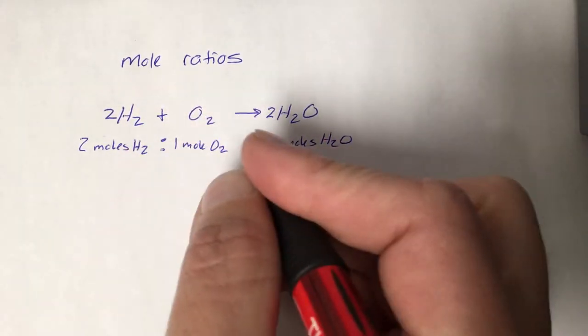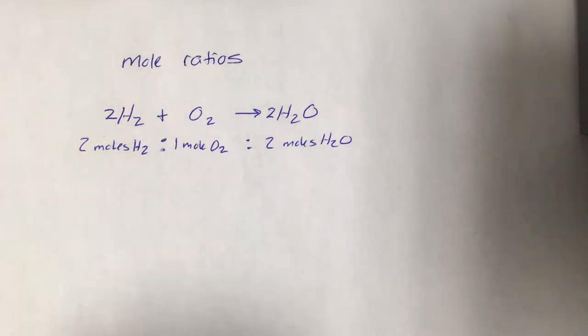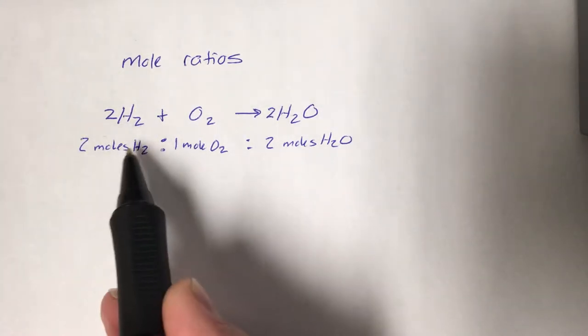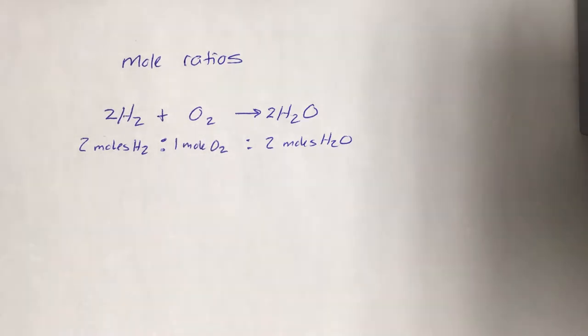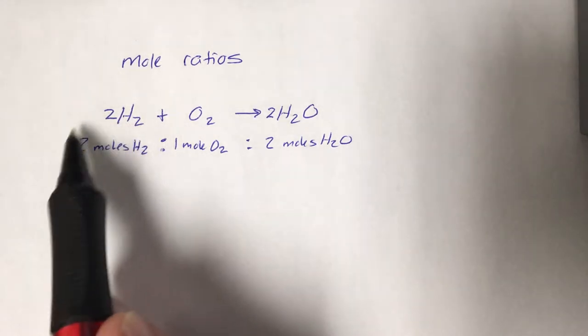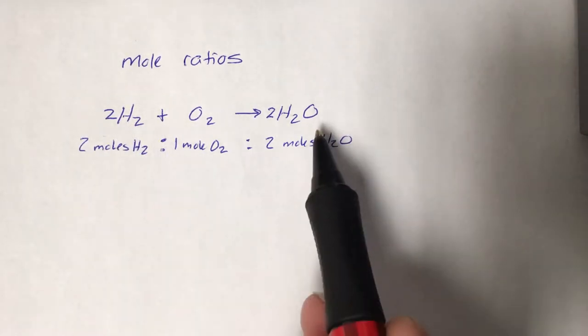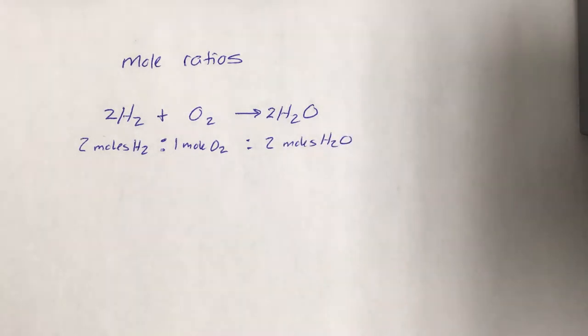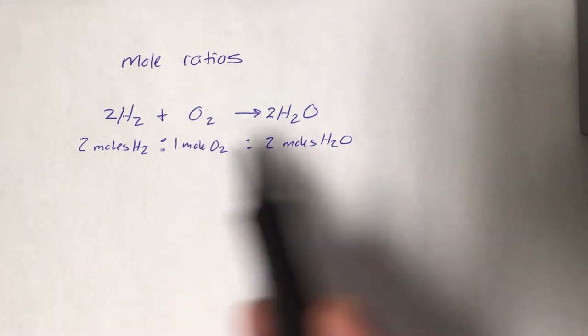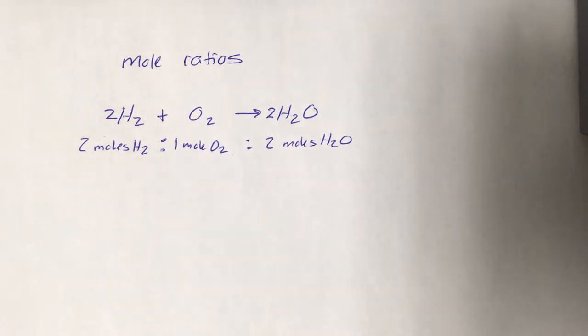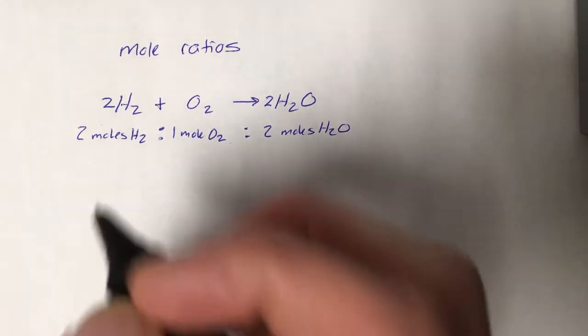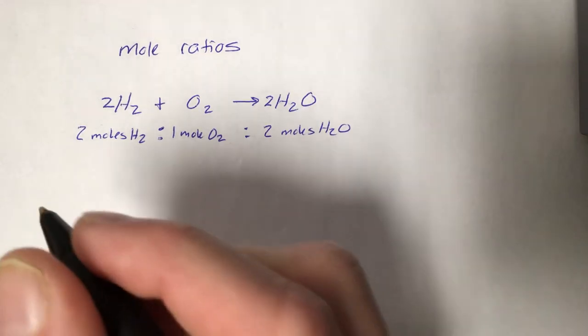These are ratios. It's a two to one to two ratio. In other words for every two moles of hydrogen we have we would need one mole of oxygen for a complete reaction. We can also go across the arrow with this ratio. For every two moles of hydrogen we have we can produce two moles of water. These are ratios. We can set these ratios up as equivalences to solve problems and really make predictions which is what stoichiometry is all about.